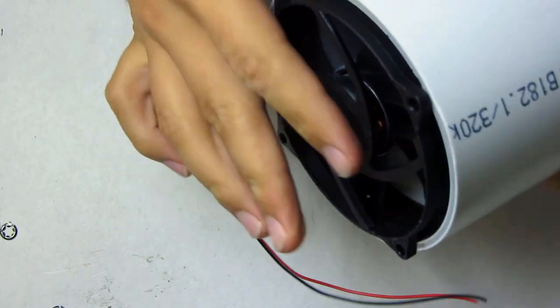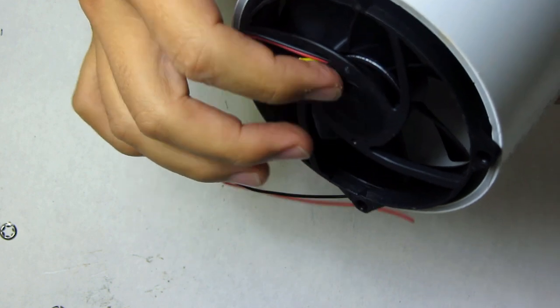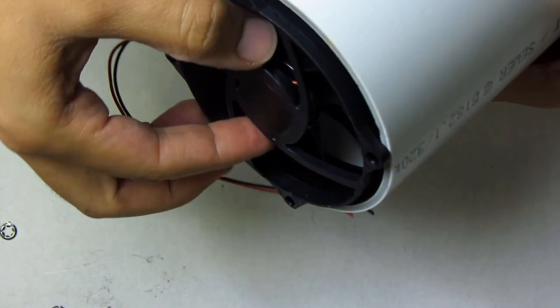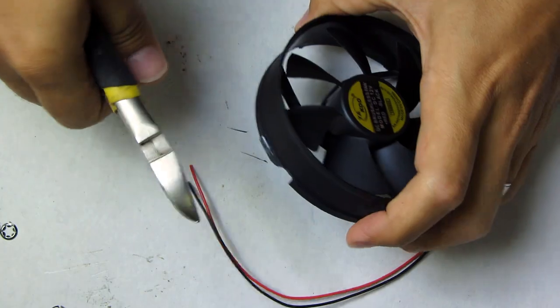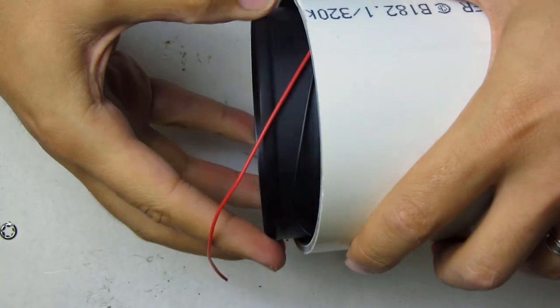Now we can see a problem. The fan doesn't fit inside the pipe that we're going to be using as a case because of these tabs. So let's just cut them off. Be careful they'll go flying but after they're all off it fits nicely.